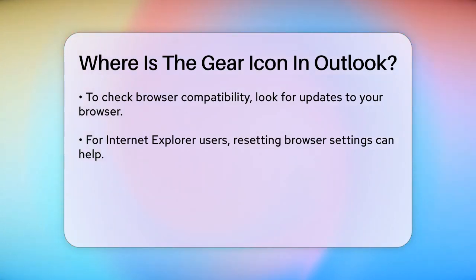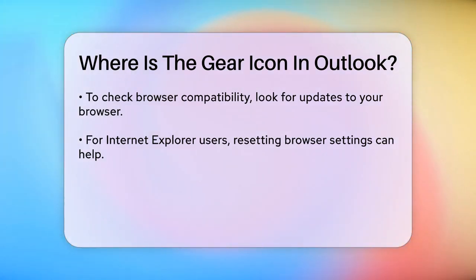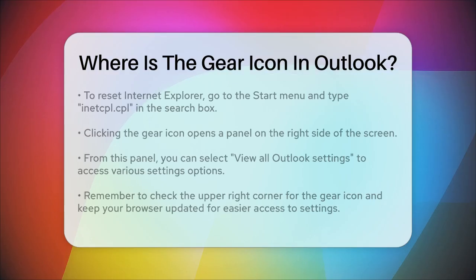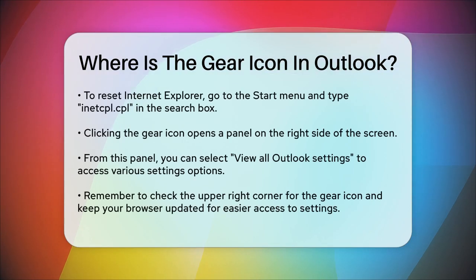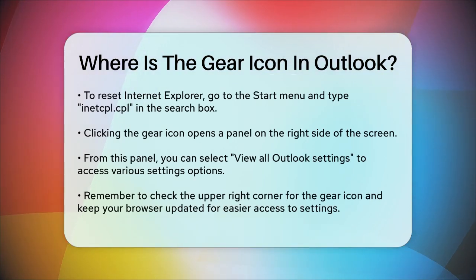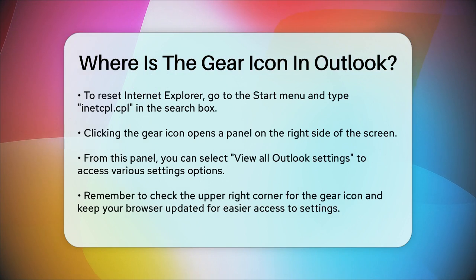Once you've located the gear icon, clicking on it will open a panel on the right side of the screen. Here, you can click on View All Outlook Settings at the bottom to access all the settings options for your Outlook account.